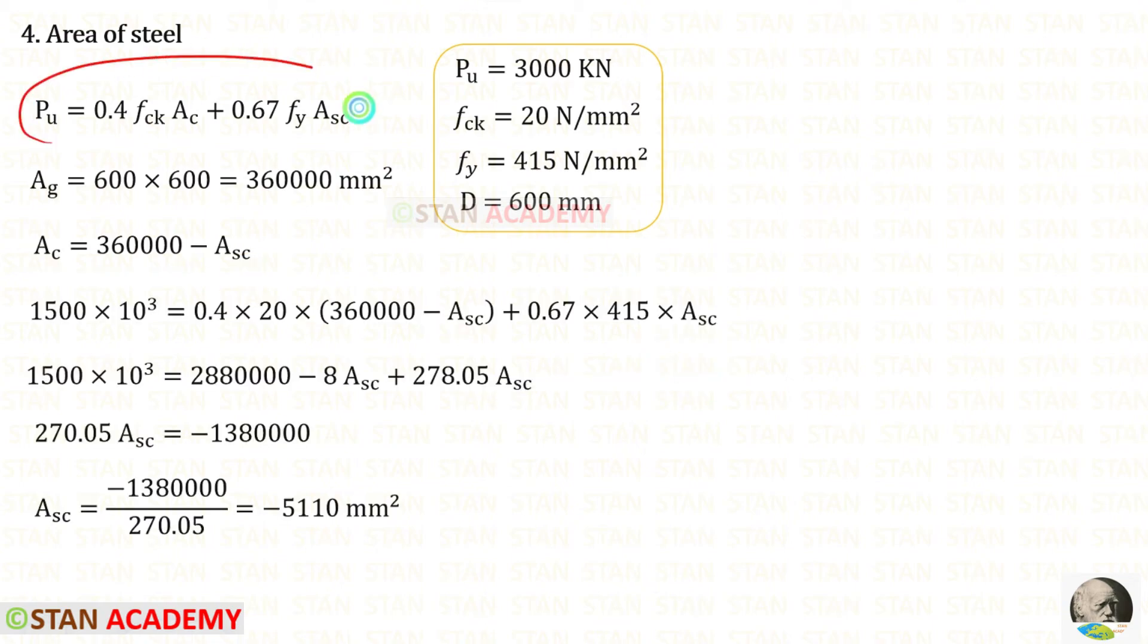In this formula let us apply everything. For Asc we will get a negative value. That means this column does not need reinforcement. The concrete is enough to withstand the load, but anyway we have to provide the reinforcement.